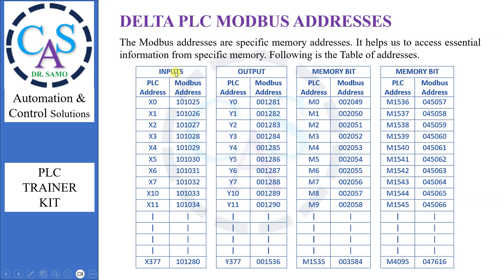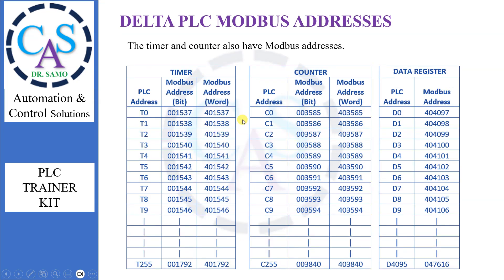Delta PLC Modbus Addresses: The Modbus addresses are specific memory addresses. They help us to access essential information from specific memory. The following is the table of addresses. PLC addresses and Modbus addresses are given. Input pin has PLC Address X0 and Modbus Address 101025. Output pin has PLC Address Y0 and Modbus Address 001281. Memory M0 has PLC Address M0 and Modbus Address 002049. We always use Modbus addresses in Modbus Protocol RS-485 communication. Timers and counters also have Modbus addresses.